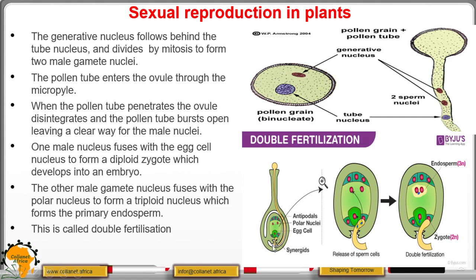Here is the embryo sac showing its contents. This is the pollen tube as it enters through the micropyle. The ovule tip disintegrates around the entry point, and then the tube bursts open to leave passage for the male nuclei. One of the male nuclei fuses with the egg cell nucleus to form a diploid zygote.